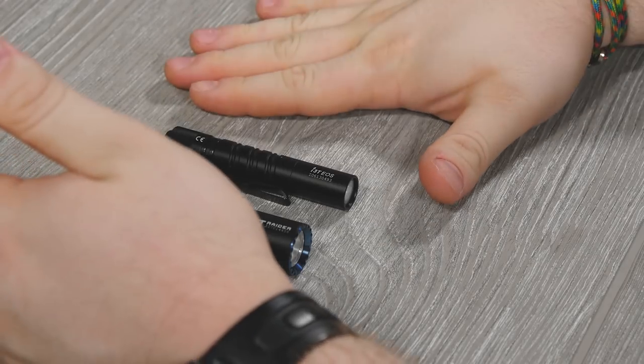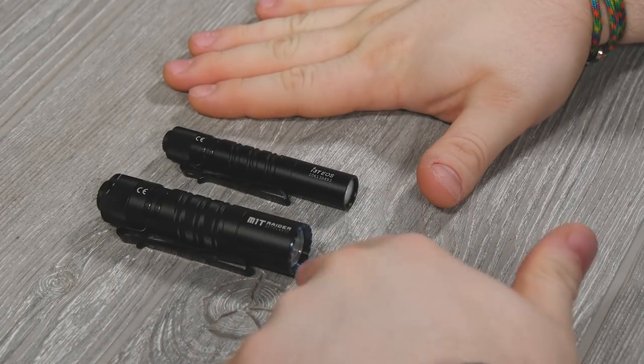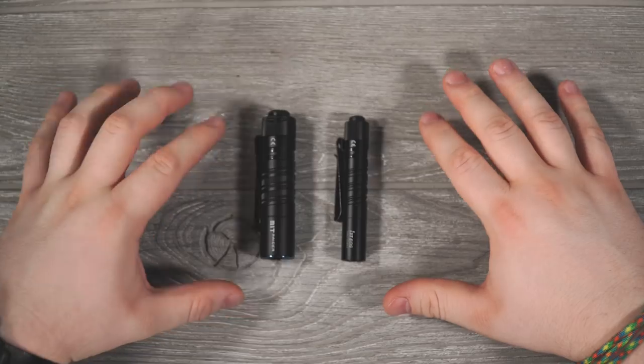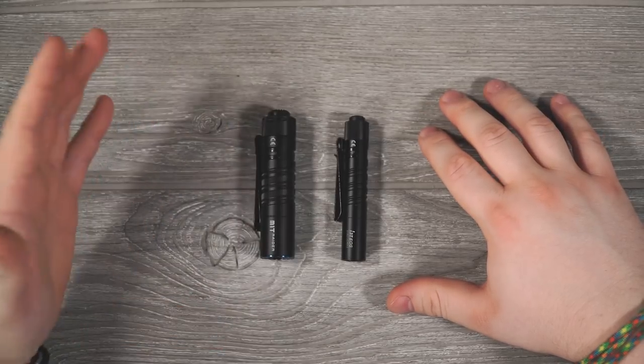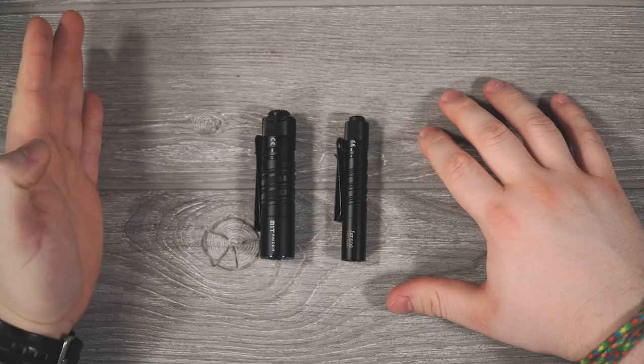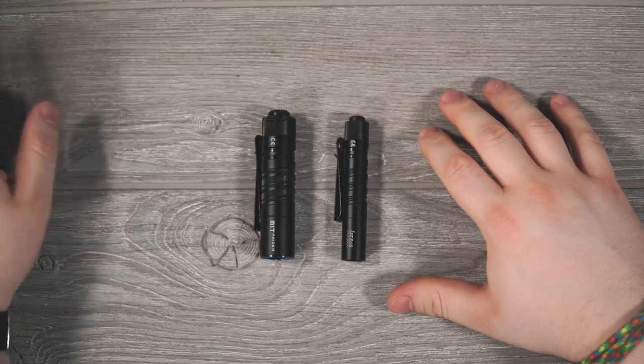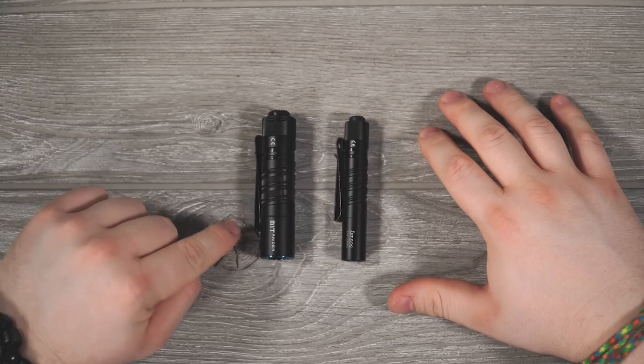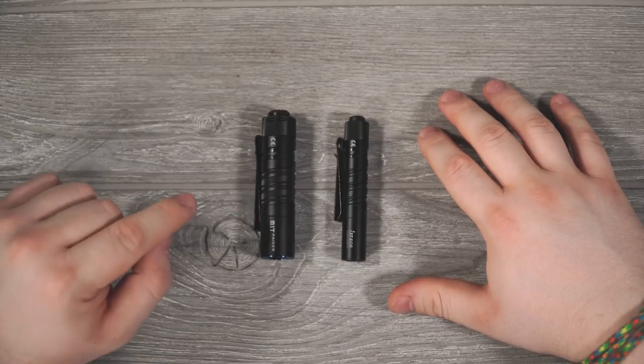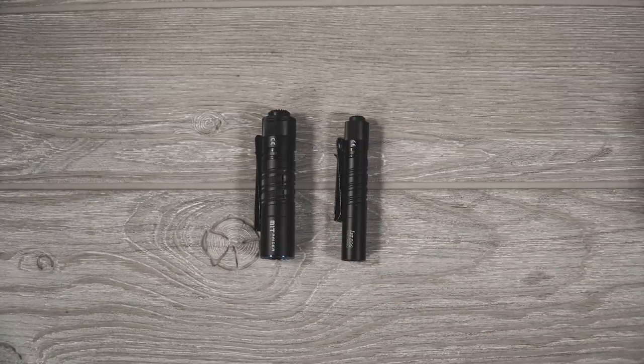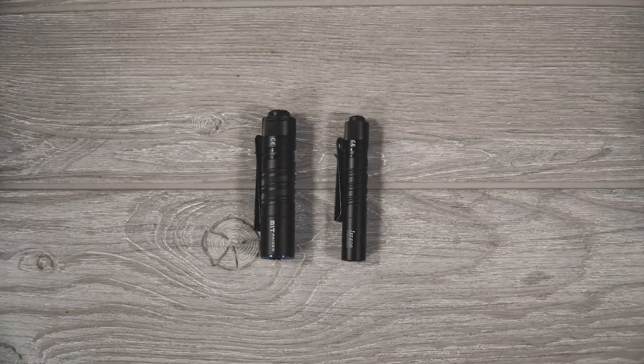The i3T EOS came out a few weeks ago. I posted about it on the mod website and posted some pictures of it as well. Then we have the M1T Raider which is not out yet. It's actually launching this Friday with Olight's Elite sale which starts on July 27th and lasts throughout the weekend. I'll have a little more detail about that at the end of the video, but you will be able to get this flashlight at a discount at launch.